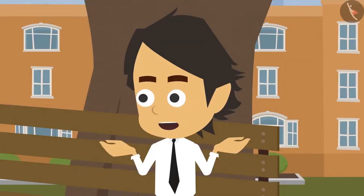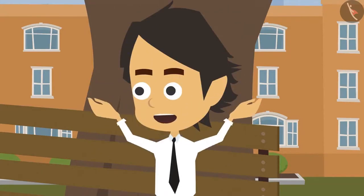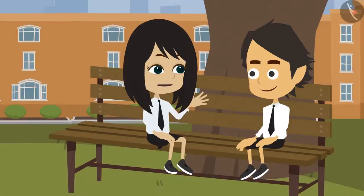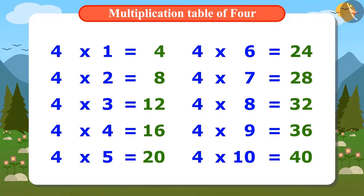But my problem hasn't been resolved. How many tables are needed for 32 guests? Hey, we already know it. Look, 32 comes in the multiplication table of 4 when we multiply 4 by 8. That means you need 8 tables.